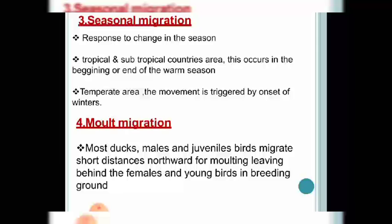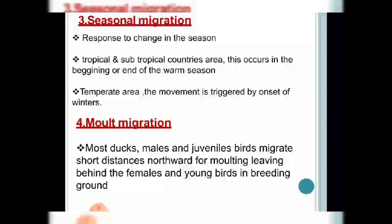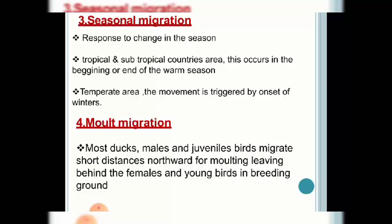The third type is seasonal migration. Due to different seasonal responses, birds tend to move to different places. In tropical and subtropical regions, birds tend to move at the beginning or end of summer, whereas in temperate areas migration is triggered during winter. Seasonal changes cause birds to move from one place to another.